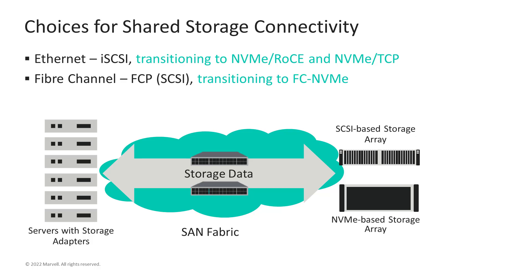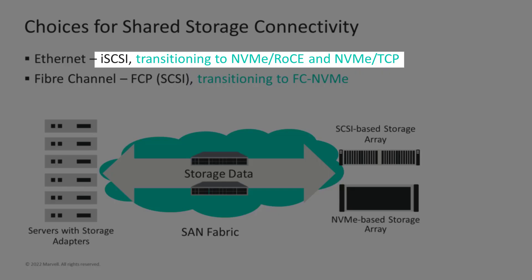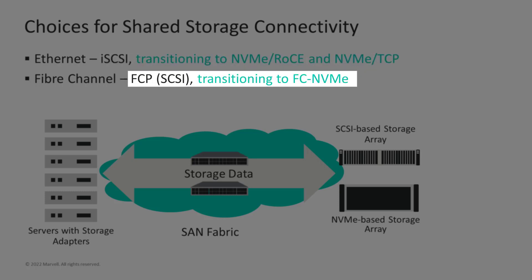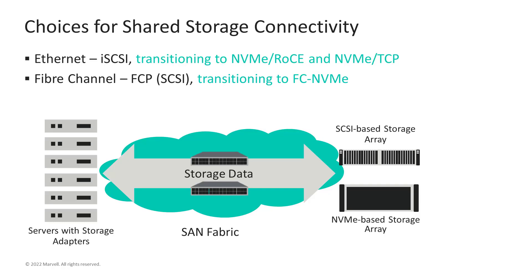For Ethernet, the iSCSI world will transition to NVMe over RoCE II, or RDMA over Converged Ethernet, or to NVMe over standard TCP. For Fibre Channel, the FCP world will transition from the SCSI-based FCP to FC NVMe.